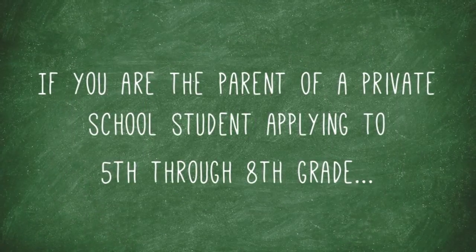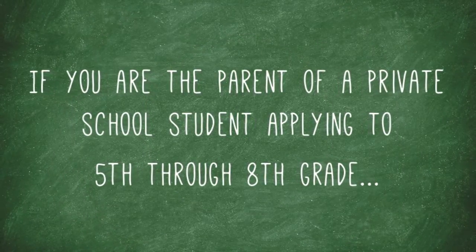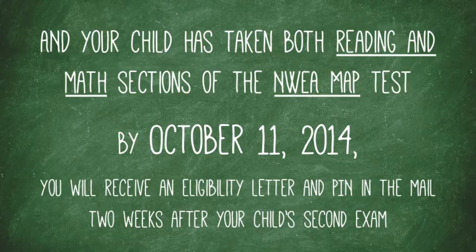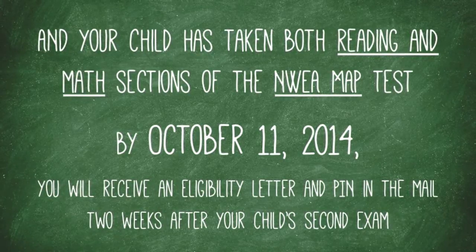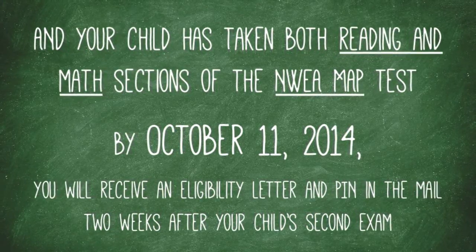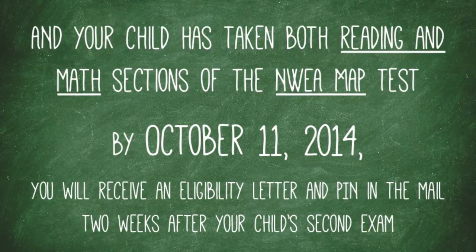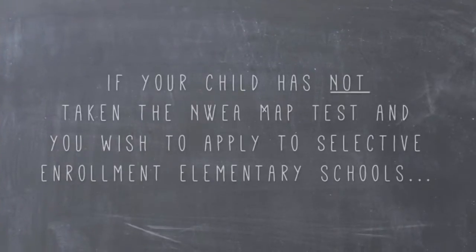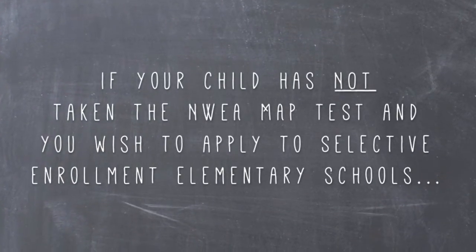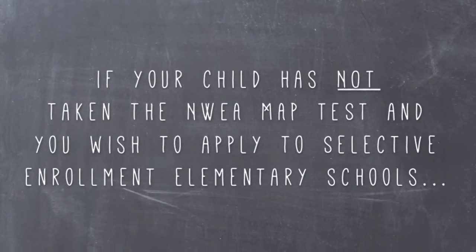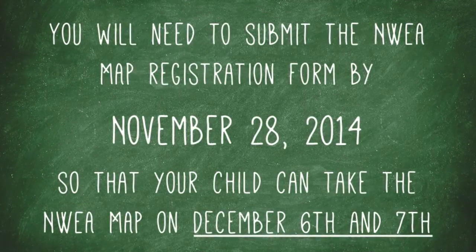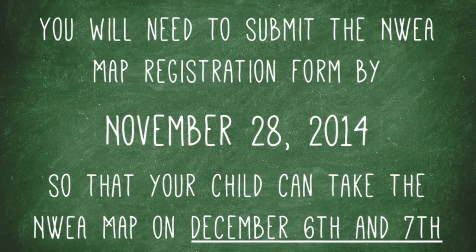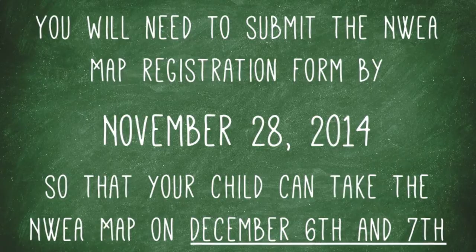If you are the parent of a private school student applying to 5th through 8th grade and you have taken both reading and math sections of the NWEA MAP test by October 11, 2014, you will receive an eligibility letter and PIN in the mail two weeks after your child's second exam. We will talk about this PIN in a moment. If your child has not taken the NWEA MAP test and you plan to apply to selective enrollment elementary schools, you will need to submit the NWEA MAP registration form by November 28, 2014 so that you can take the NWEA MAP on December 6th and 7th.